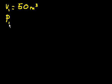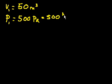Let me call this the initial volume. So let's say my initial volume is 50 cubic meters. And let's say my initial pressure is 500 pascals. Just so you remember, what's a pascal? That's 500 newtons per meter cubed.